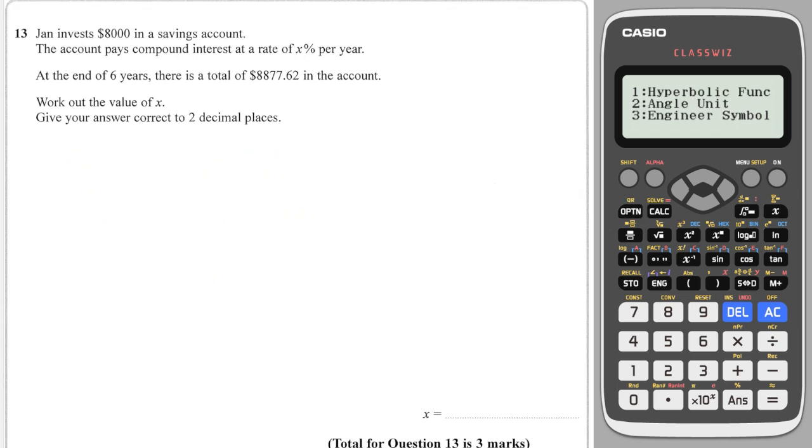Final tricky question: Yan invests £8,000 in a savings account. The account pays compound interest at a rate we don't know. At the end of six years, there's £8,877.62 in the account. Work out the rate. We would have had £8,000 to start with, then that was multiplied by some value—let's call it M for multiplier—raised to the power of 6 because we're doing it for six years. That equals 8,877.62.